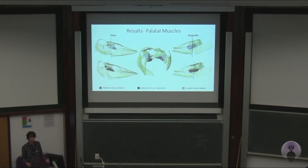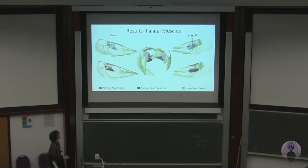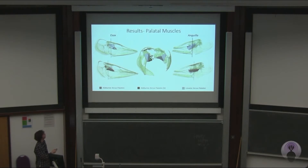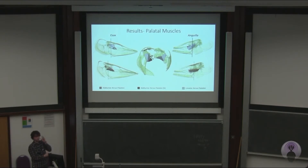Moving on to the palatal muscles. You've got the adductor arcus palatini, shown in darker grey, which is responsible for palatal adduction — bringing the suspensorium medially inwards. That runs from the brain case to the hyomandibula. You've then got the antagonist, the levator arcus palatini, which originates from the ventral margins of the sphenotic — a bone at the back of the orbit on the skull roof — and runs posteriorly to attach to the hyomandibula. The suspensorium is a very important bone complex, and the hyomandibula especially so.